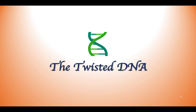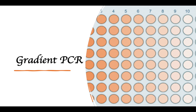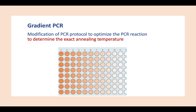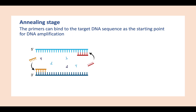Hello everyone, welcome to the Twisted DNA. The topic for today is gradient PCR. Gradient PCR is a modification of the PCR protocol in order to optimize the PCR reaction by determining the exact annealing temperature. Here you can see the gradient of temperature, where it goes from higher temperature to lower temperature.